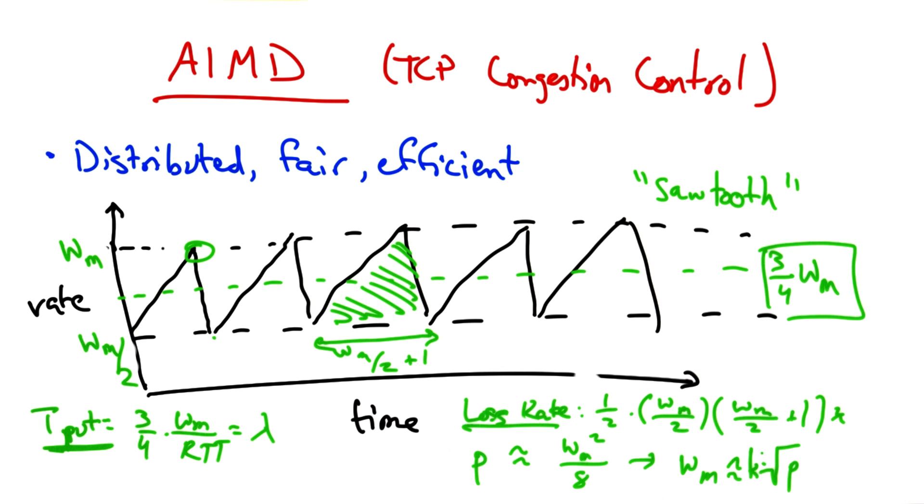And I'm just going to get rid of the constant. So a loss occurs once for this number of packets, so the loss rate is simply 1 over that quantity. And then when we solve for WM and plug in for throughput, we see that the throughput is inversely proportional to both the round trip time and the square root of the loss rate.